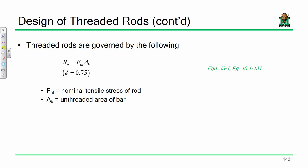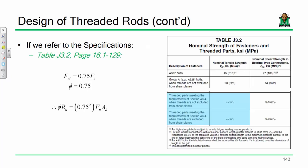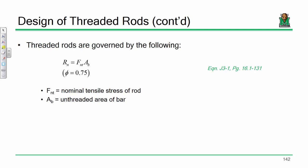Now, the capacity: φRn = φ × FnT × Ab. The phi value is 0.75 because we're talking about a rupture limit state — basically the rod snapping in half in tension. Remember, we use phi = 0.9 for yielding and phi = 0.75 for fracture.